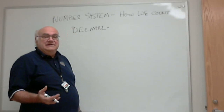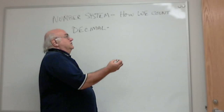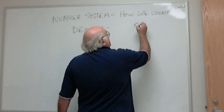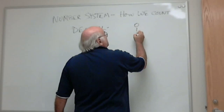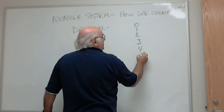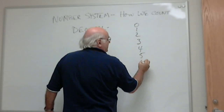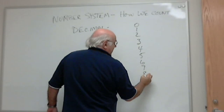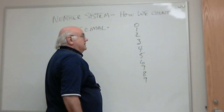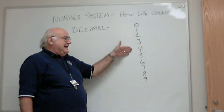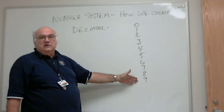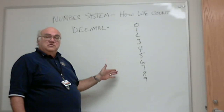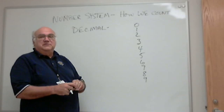We have ten digits that we use. We can use zero, one, two, three, four, five, six, seven, eight, and nine. We can use ten single digits before we have to go to the next position.